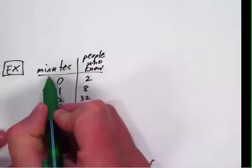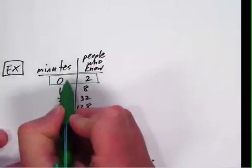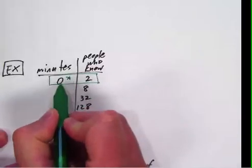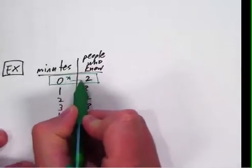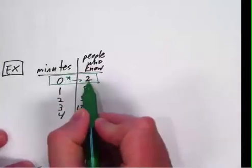The equation is based off of two things, one being the initial value, when t of 0 or time is 0, and then we know that two people know. That number is going to be in our equation.